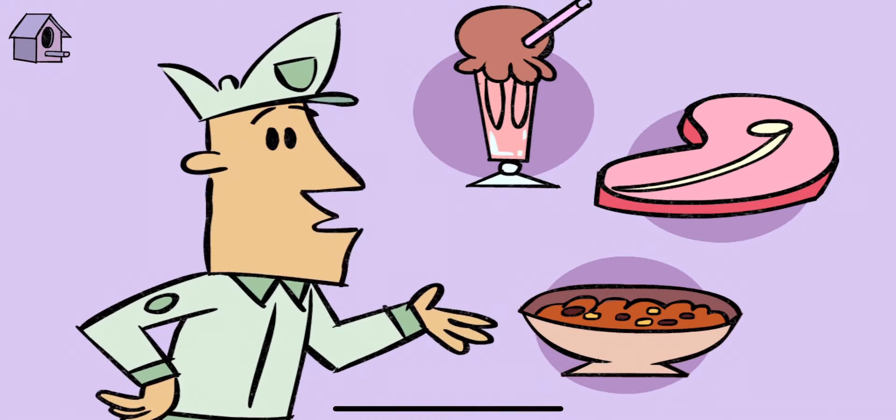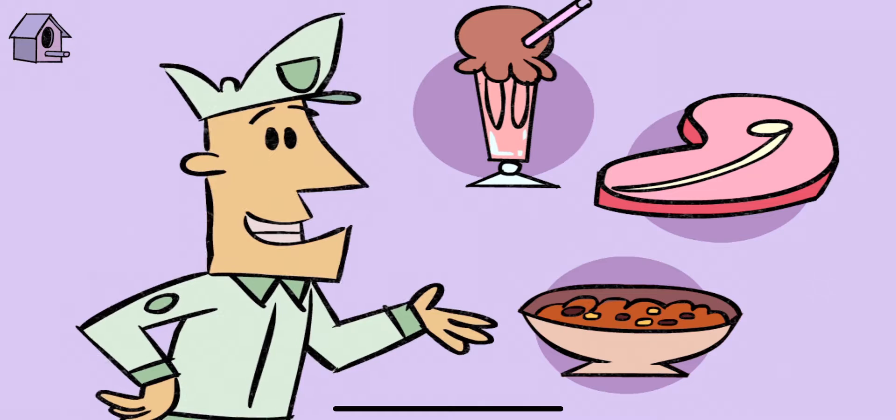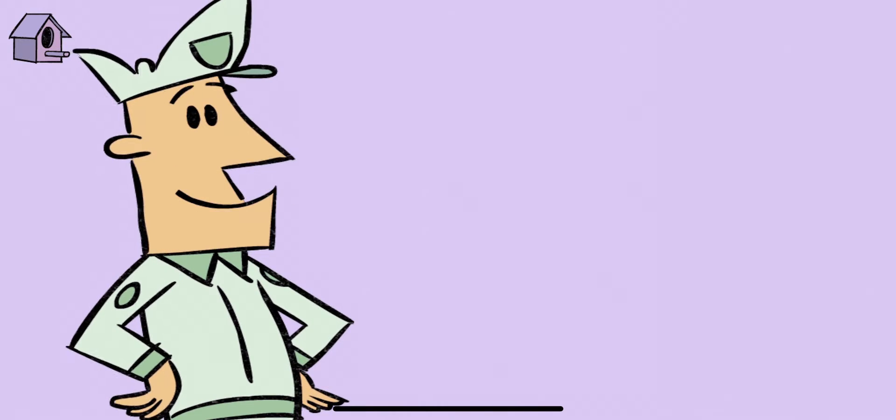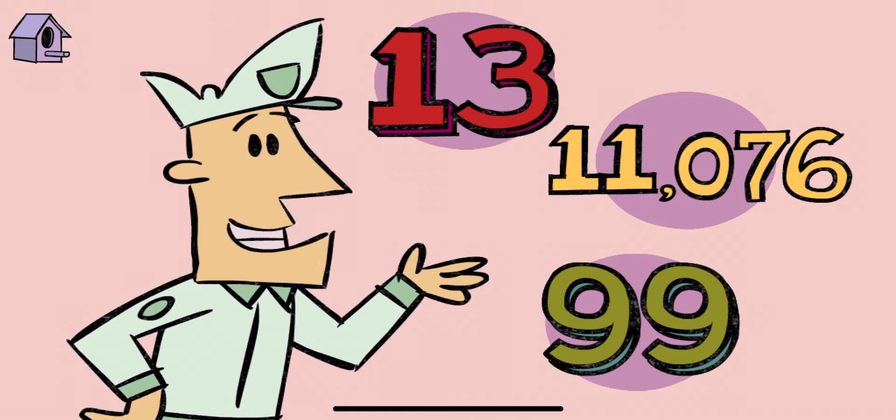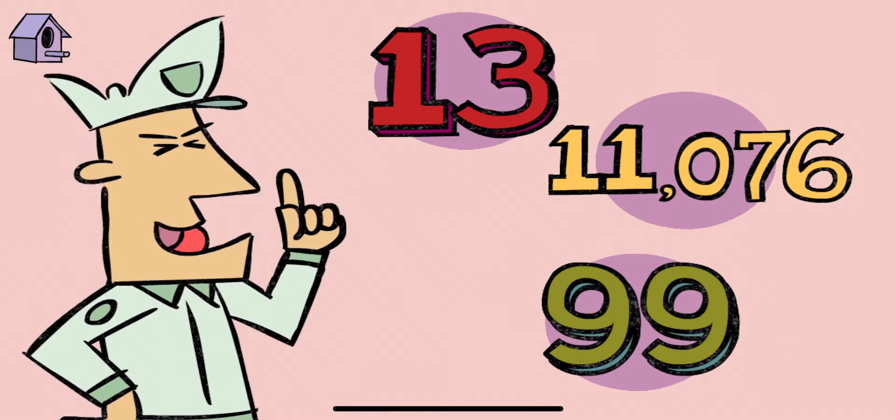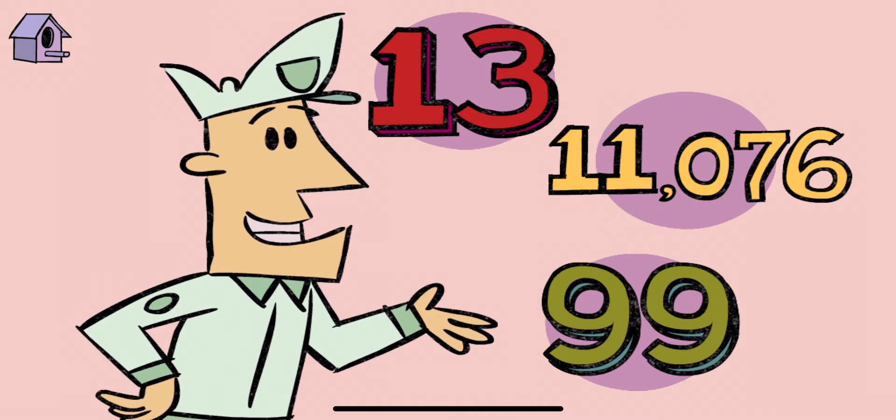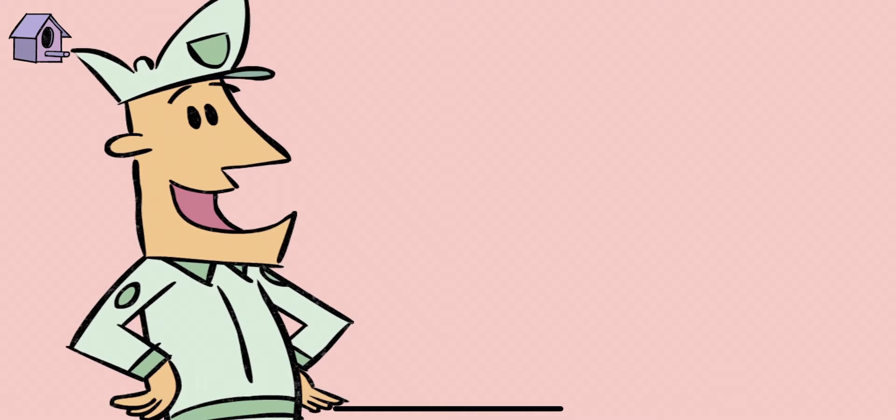Vegetarian chili con carne. Nice. Now, pick a number. Thirteen. Eleven thousand seventy-six. Ninety-nine. Well done.